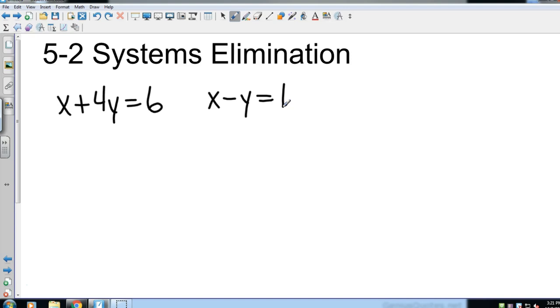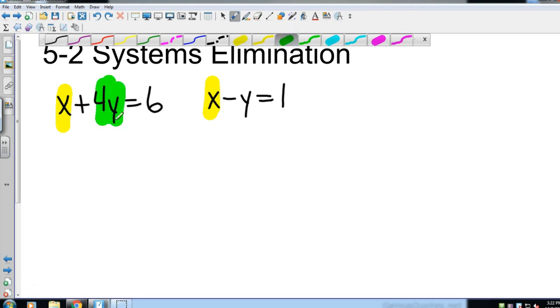So our goal here is to get one variable by itself, so either that to be x equals something or y equals something. So I want to take a look at my variables. I noticed that my x's are all by themselves. That y has a 4 attached to it. This y has a negative attached to it. Now this one works out easy because it's the first one and I usually put the easiest problem first.